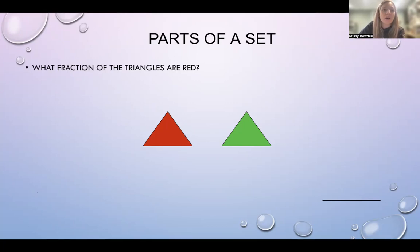Parts of a set. What fraction of the triangles are red? So look at it. You can see that there are two triangles. So one out of the two are red. And you would say the red triangles, there's one, total number of triangles in all. And that is said one half.